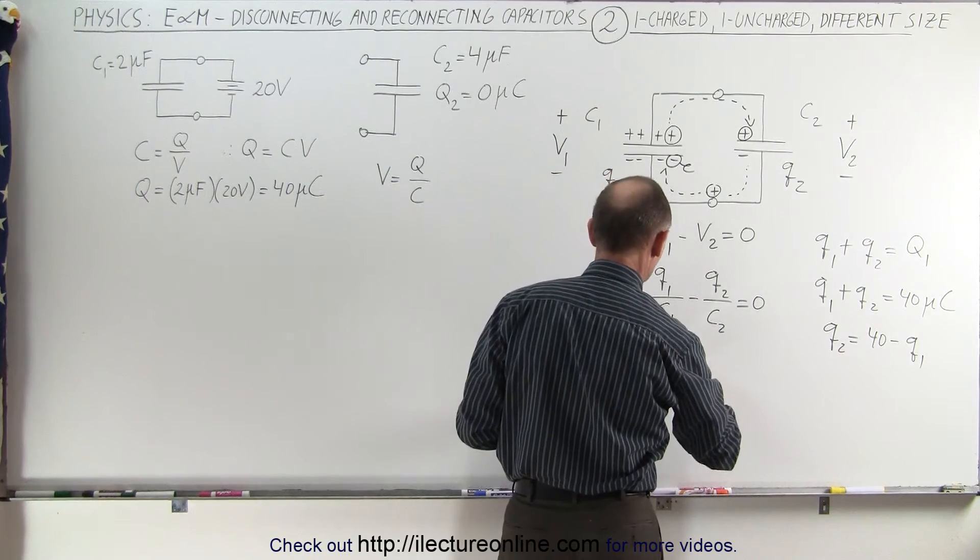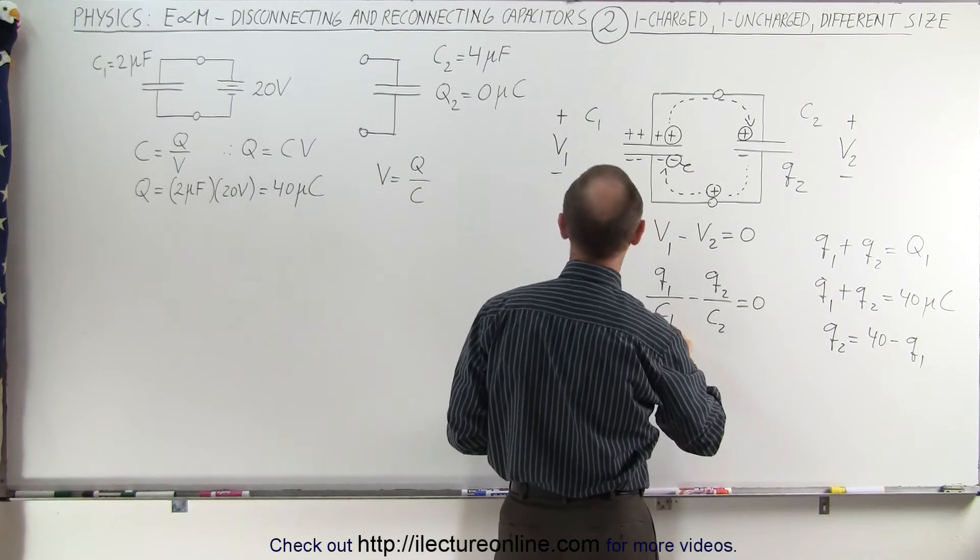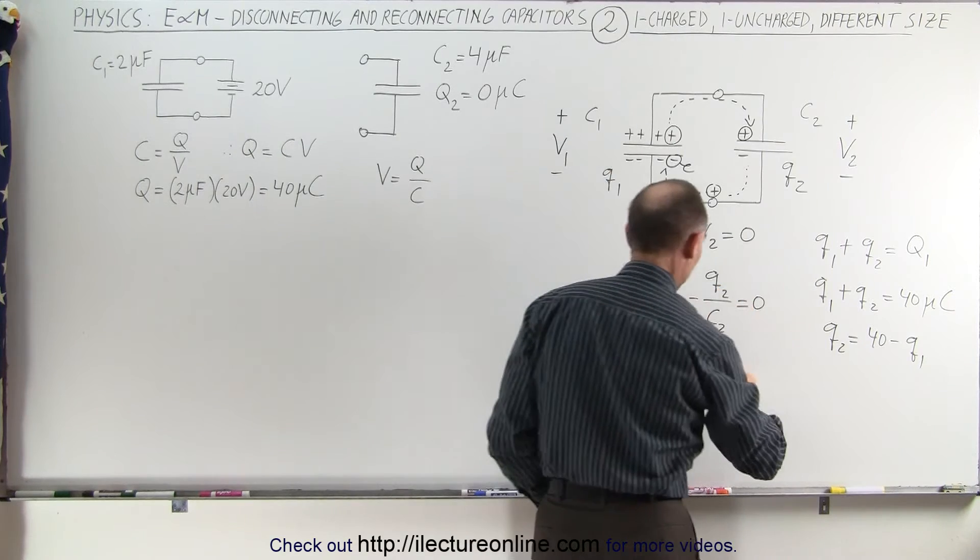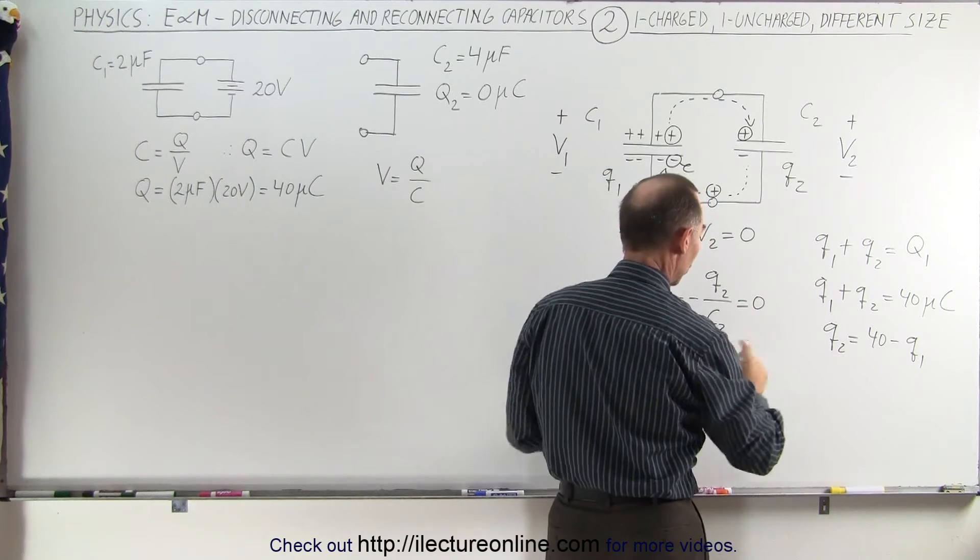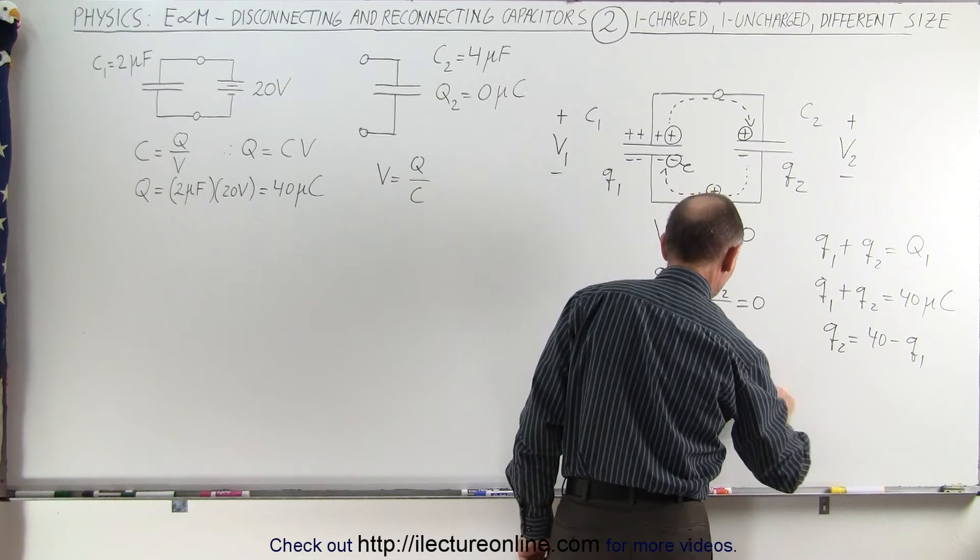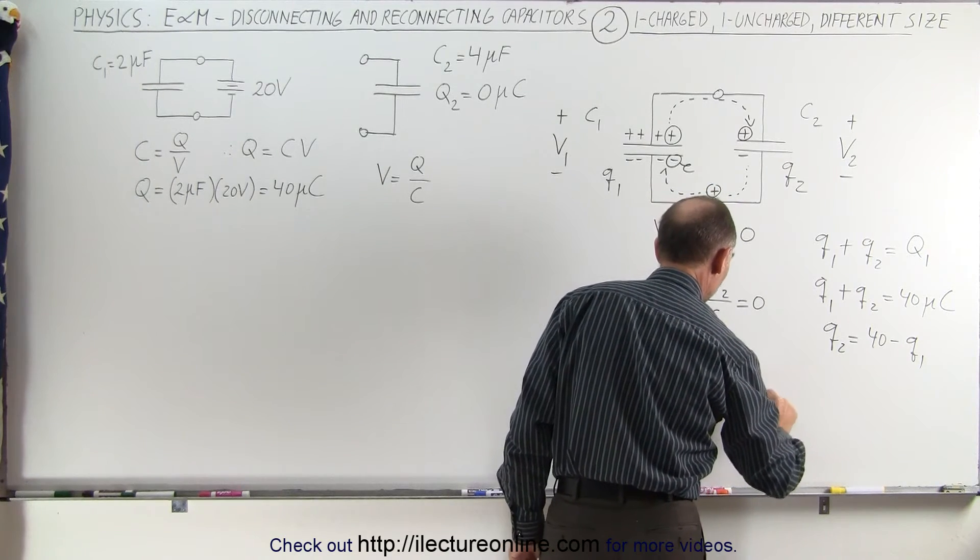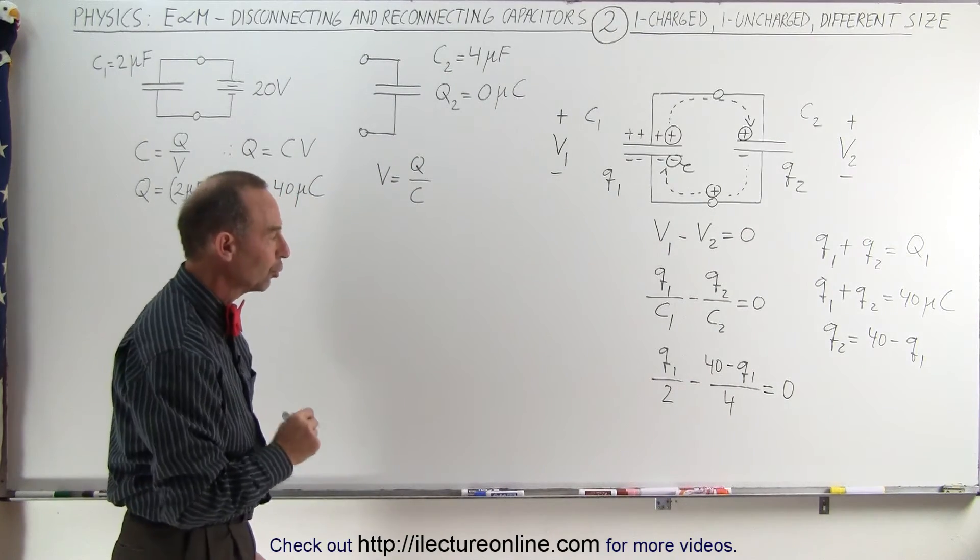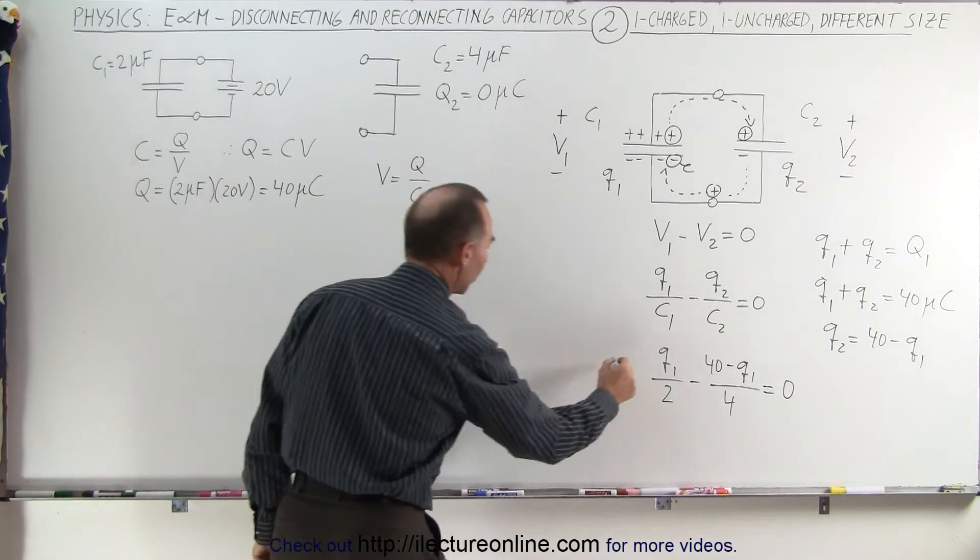Q1 divided by C1. Now C1 is 2 microfarads, so I put down the 2, minus Q2, which is going to be 40 micro coulombs, just drop off the micro coulombs, minus Q1 divided by C2, which is 4, and that equals 0. Now notice we have an equation with just one variable, Q1. So we're going to solve that.